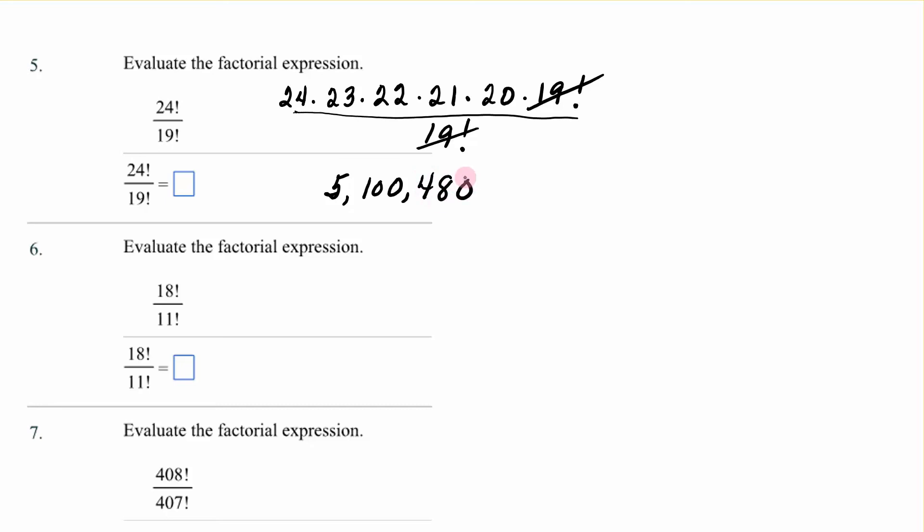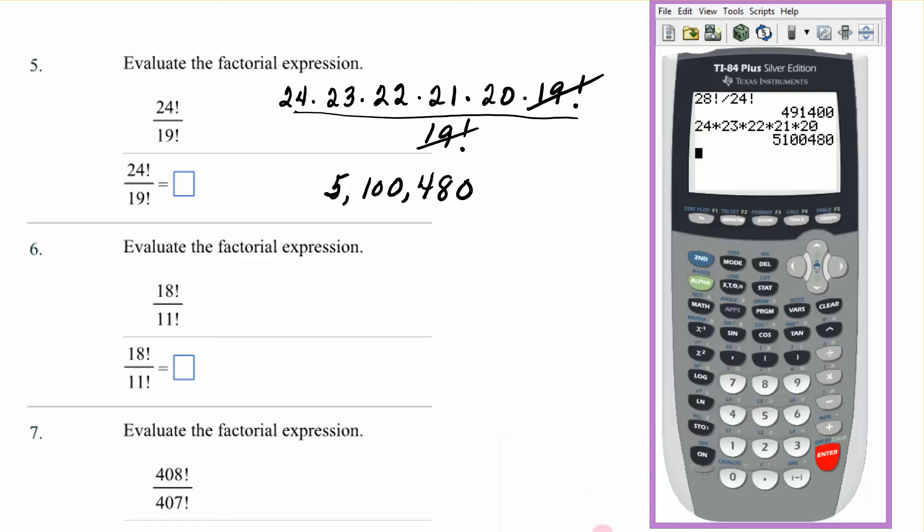The other way to do it, and I will probably start doing my problems this way. If I did 24, go to math, to probability, exclamation point. That's 24 factorial divided by 19 math, probability, number 4. That's 24 factorial divided by 19 factorial. And there is the same answer. So from now on, I think I'll just do the factorials here on the calculator.